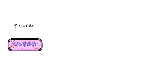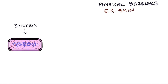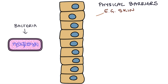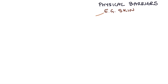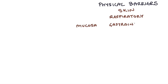Let's look at what happens when a pathogen invades the body. Initially there are physical barriers that need to be broken before an infection can take place. The skin is an example of one of these barriers. Most invaders will get stuck at this barrier, however occasionally an invading pathogen will get through, such as when there's a cut in the skin. As well as the skin, there are other physical barriers such as the mucosa of the respiratory system, the gastrointestinal tract, and the urinary tract.